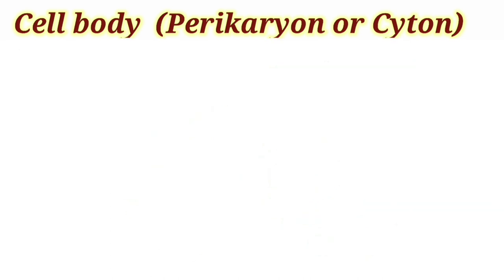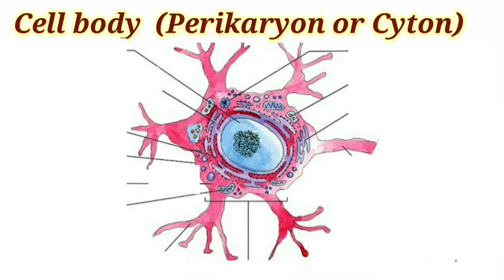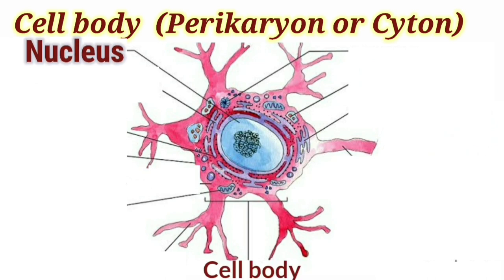Let us go through the structure of the cell body. The first structure is the nucleus — it is large, spherical, ovoid, and located in the centre. Sometimes its size varies according to the activity of the cell. This nucleus basically contains chromatin fibres, which are very fine thread-like structures.